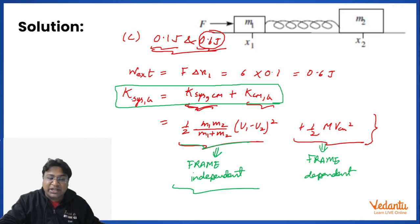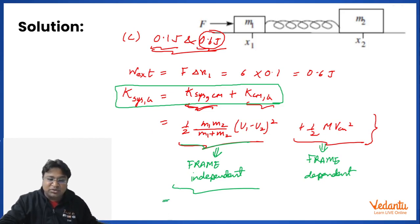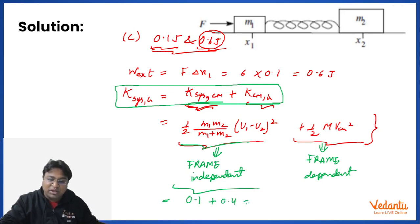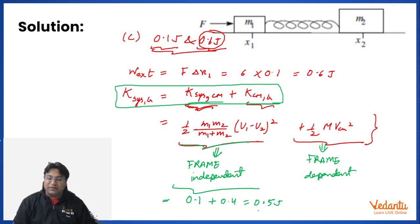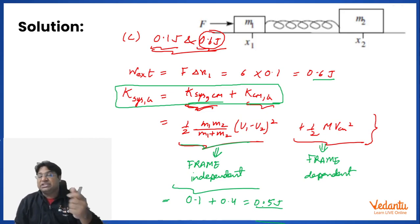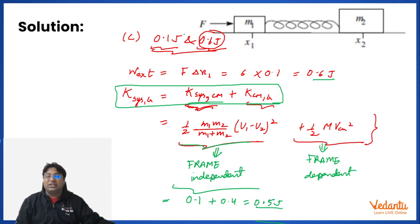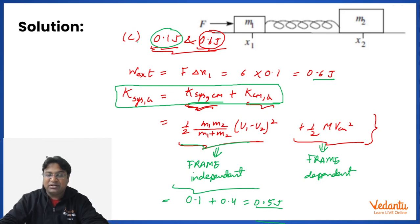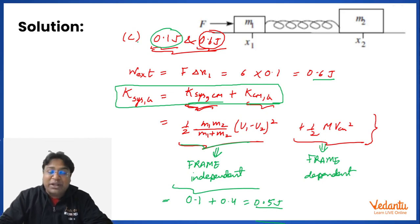Coming back to the question: KE of the system in the ground frame = KE in CM frame + KE of CM = 0.1 + 0.4 = 0.5 J. Total energy from external agent was 0.6 J. The difference of 0.1 J is the energy stored in the spring. This gives us the two answers — I hope you enjoyed and understood this question.